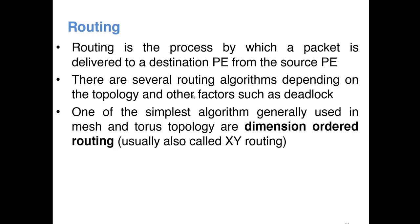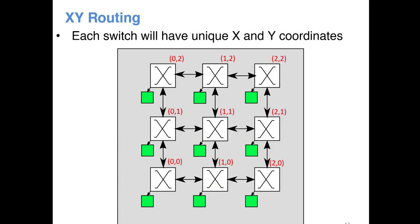In XY routing, what happens is every switch in the NoC, this is usually used in mesh or torus topology, will have an X coordinate and Y coordinate. We usually start from the bottom left corner, so that's why it is 0,0. This is 1,0, 2,0. You can see X is increasing this way, Y is increasing this way. So every switch will have a unique X and Y coordinate.